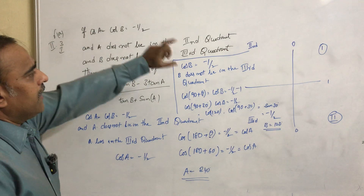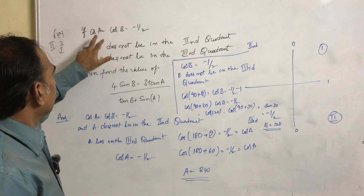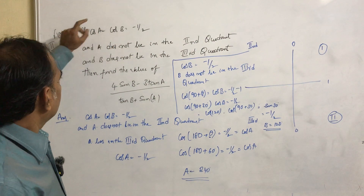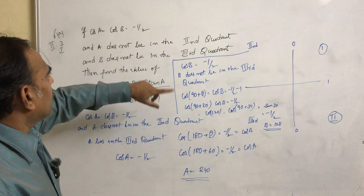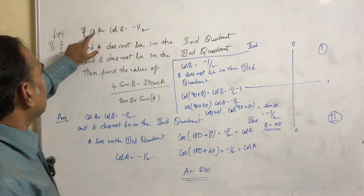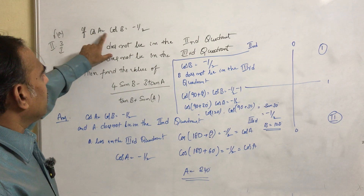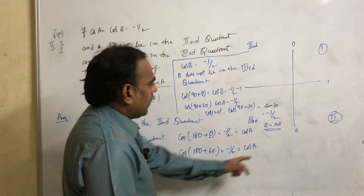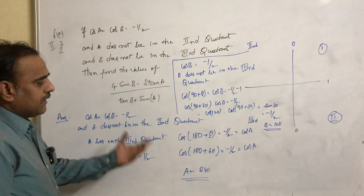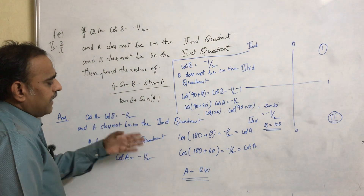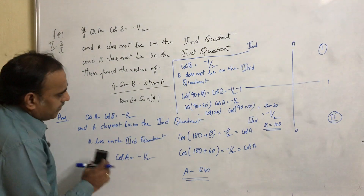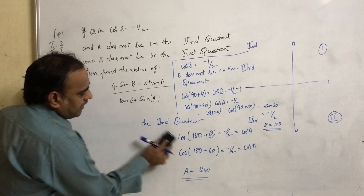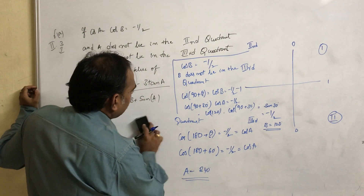From the given information, we found where a and b lie. A lies in the third quadrant and b lies in the second quadrant. According to that, we found the values: a equals 240 degrees and b equals 120 degrees.